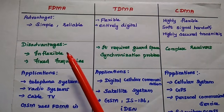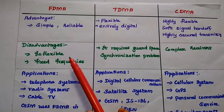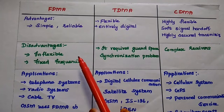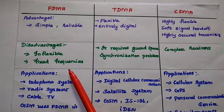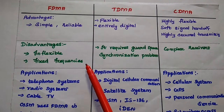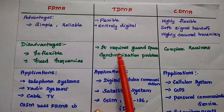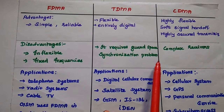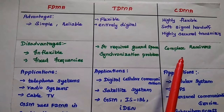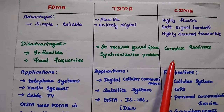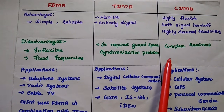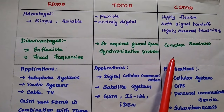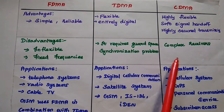Disadvantages: FDMA is inflexible, having very limited flexibility in data transmission and fixed frequency ranges. TDMA requires guard space and has a synchronization problem in data transmission. CDMA is a complex system — it is not easy to install and requires complex receivers to deal with.